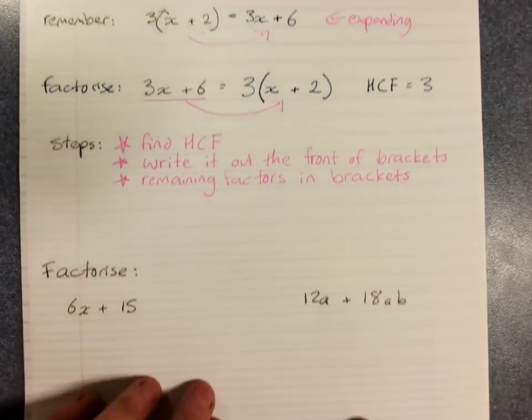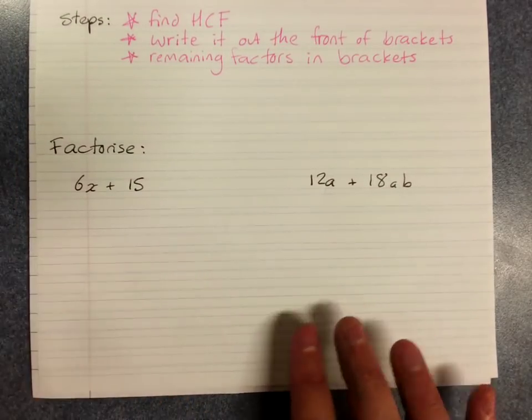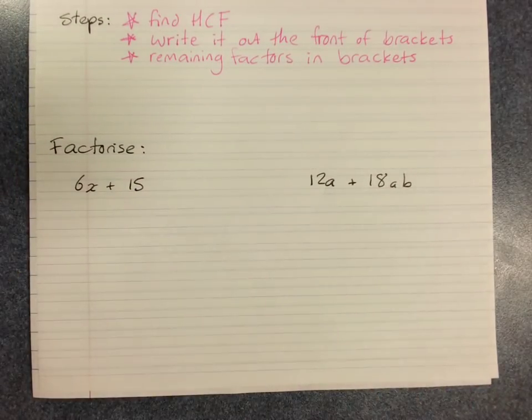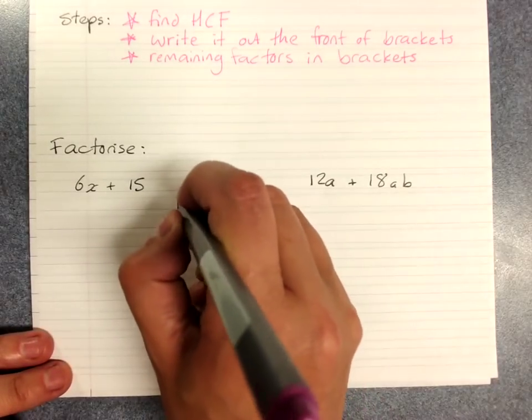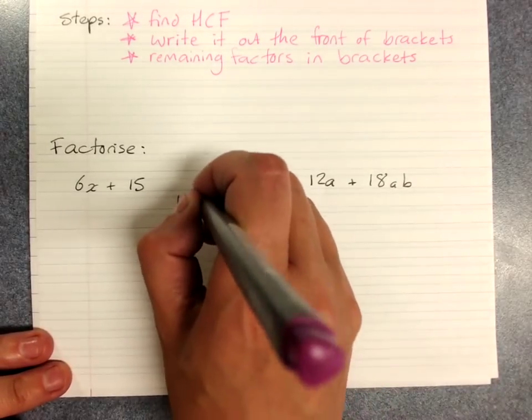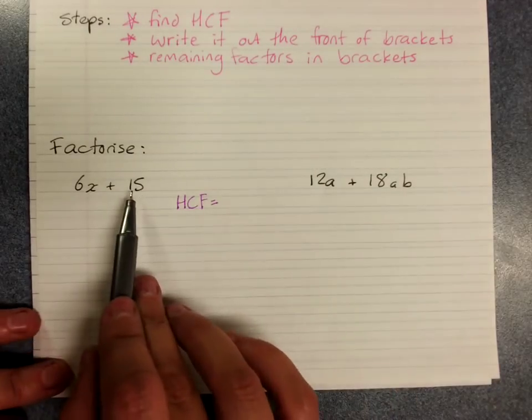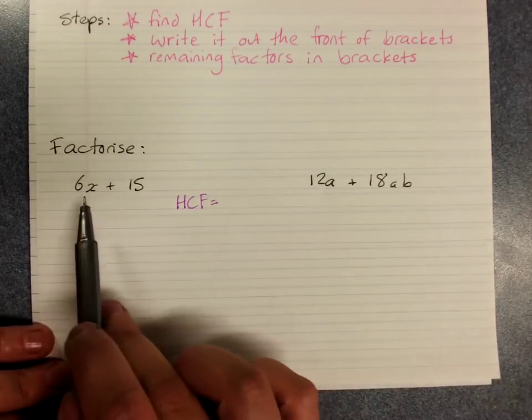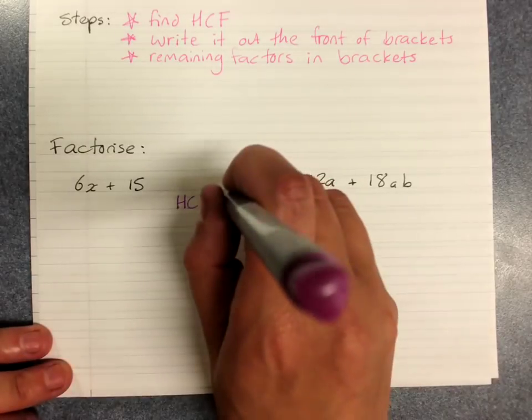So let's do some examples. Factorize 6x plus 15. We start by finding the highest common factor. 6 and 15. We're looking for a number that goes evenly into both of them. It's 3.